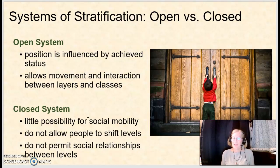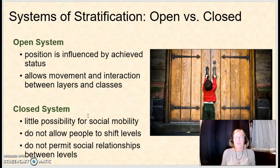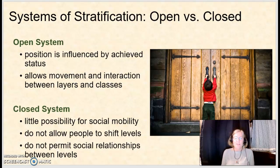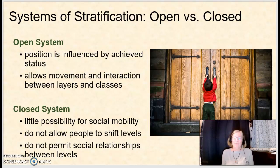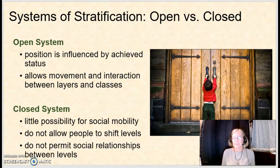Systems of stratification can be either open or closed. In an open system, our position is influenced by our achieved status — the one we can work to earn and change. Movement and interaction are allowed between layers and classes. In a closed system, there is very little possibility for social mobility; people are generally not allowed to shift levels — where you start is where you stay. The more rigidly closed systems also don't permit social relationships between people of different levels. I'll pick up in the next video with the four major systems of social stratification.